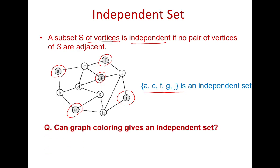Recall graph coloring — do you see any relation between graph coloring and an independent set? In vertex coloring, no two adjacent vertices have the same color. This means if vertices have the same color they are non-adjacent, which means all vertices with the same color always form an independent set.